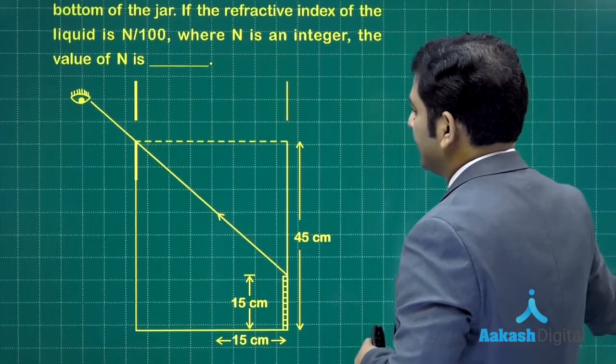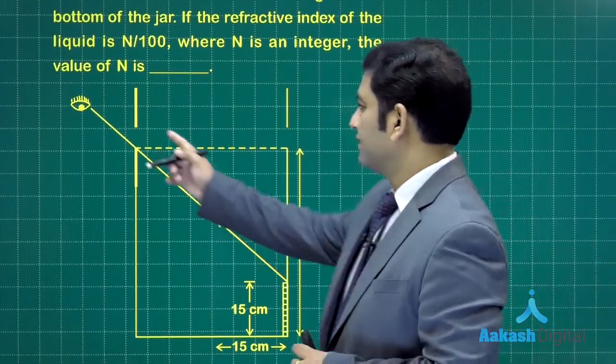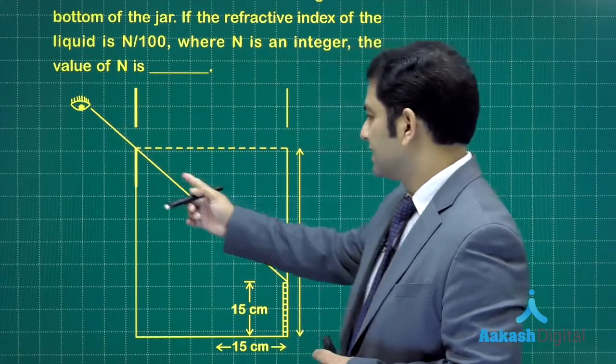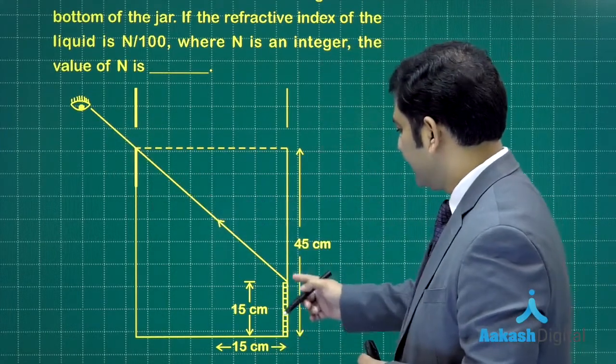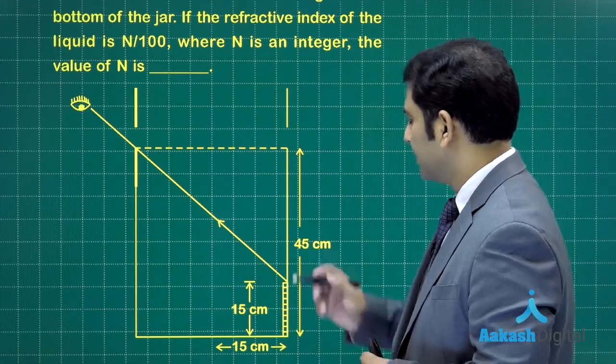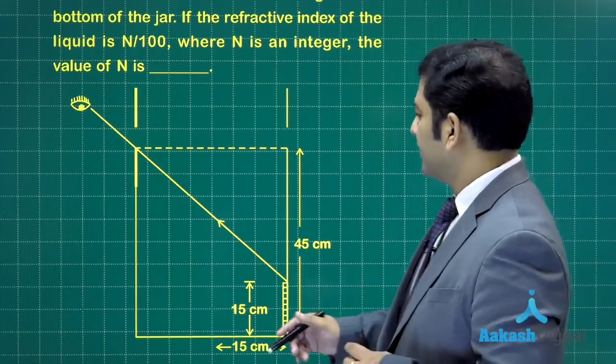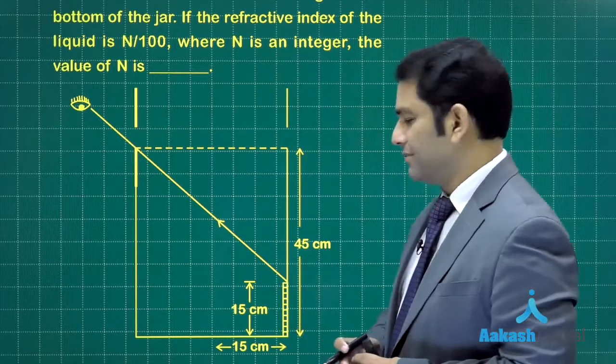This is a beaker and an observer is there. The observer's line of sight exactly hits the top of this particular block, and this is at a height of 45 centimeters as given.